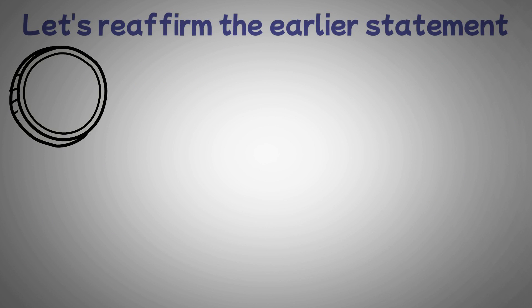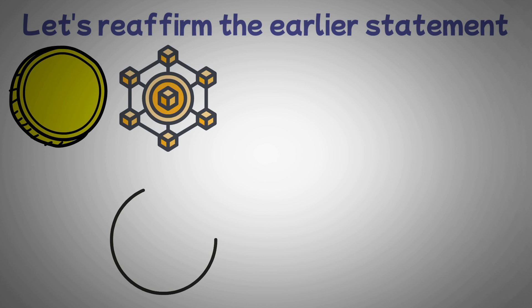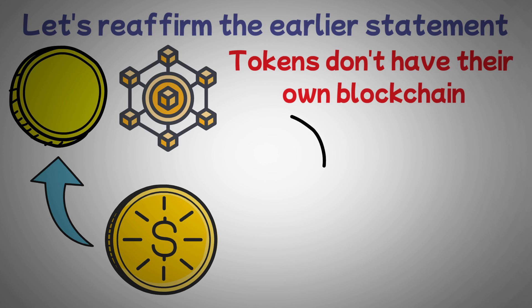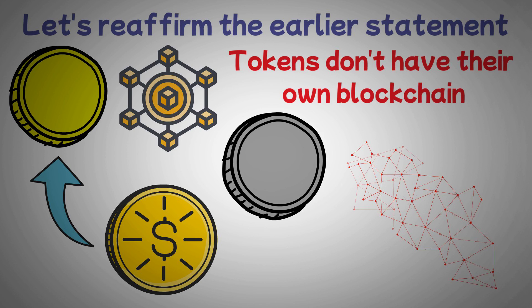Let's reaffirm the earlier statement. While cryptocurrency coins have their own blockchains, cryptocurrency tokens are hosted on the coins' already existing blockchains. To put it another way, tokens don't have their own blockchain. Instead, they are the offspring of larger parent coins and launch and operate on that parent's network.